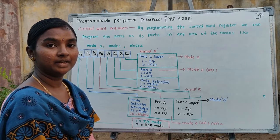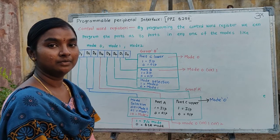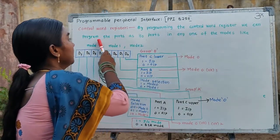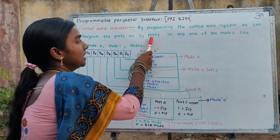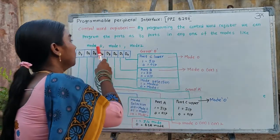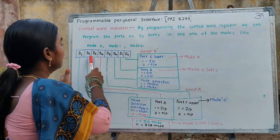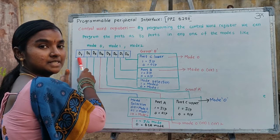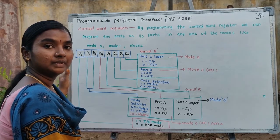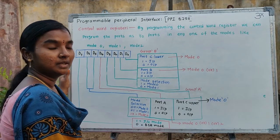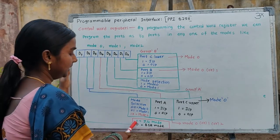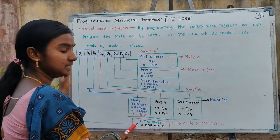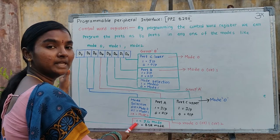The 8255 Programmable Peripheral Interface consists of a Control Word Register, in short denoted as CWR. By using the control word register, we can program ports A, B, and C as input or output ports in any one of the modes: mode 0, mode 1, or mode 2. The CWR consists of bits D0 to D7. If the value on D7 bit equals 1, the 8255 works in IO mode. If the value on D7 bit is 0, the 8255 works in BSR mode — Bit Set Reset mode.